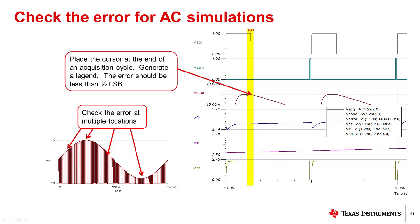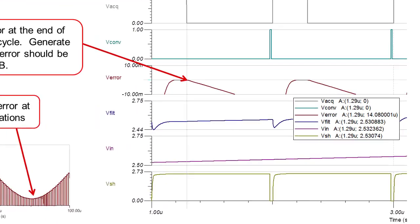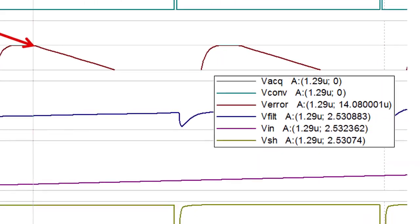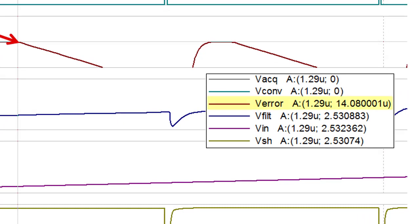In this example, you can see the cursor is set to the end of the acquisition period and a legend is created. The legend lists the value of all the signals at this point in time. In this case, you can see that the error signal is 14 microvolts, which is well within the 1.5 LSB error target.